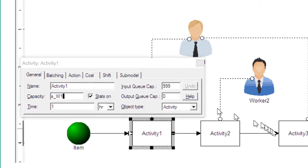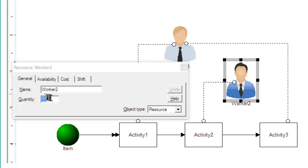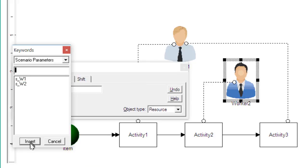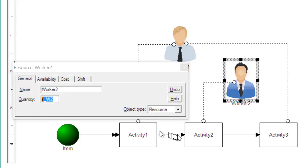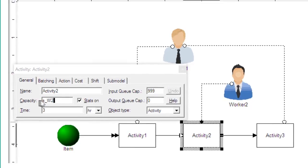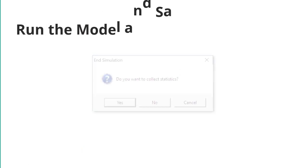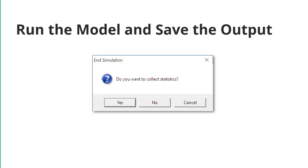That same scenario parameter will be used to change the capacity of the activity. Next, run the model and save the output. If you run the model to completion, it's automatically saved.